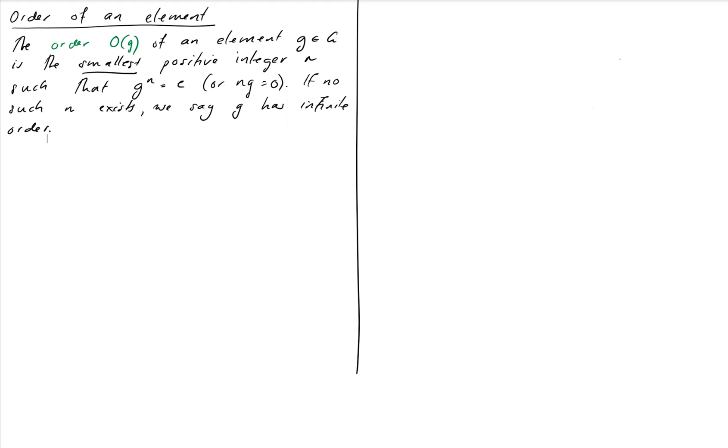Or if we were to use additive notation, n times g equals zero. And if there is no n that gets us back to the identity, then we say that g has infinite order. So perhaps the easiest way to discuss this is to look at a couple of examples.